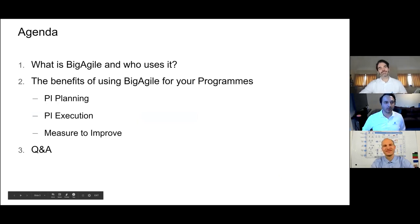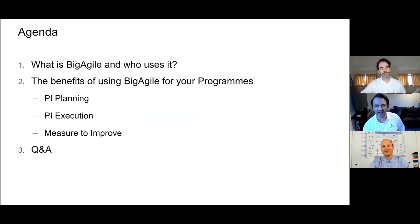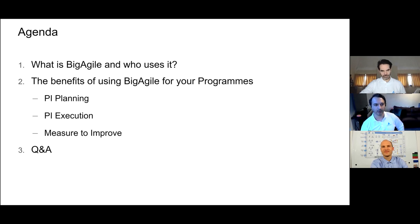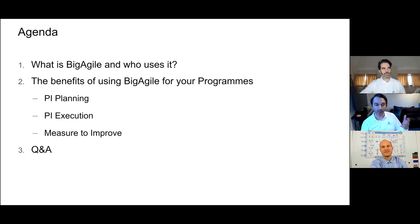In terms of what we'll cover: we'll do a brief intro first to Big Agile — what actually is it and who uses it? Then we'll spend most of the time talking about the benefits for your programs, especially if you're an RTE. We'll talk about how it relates to PI planning, executing the overall PI, and how we use it for MI information — how we measure and improve. At the end, we'll have time for questions and hopefully some answers as well.